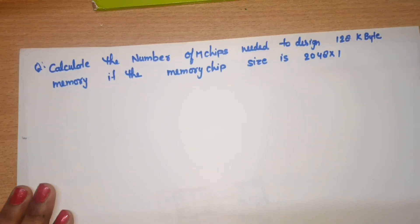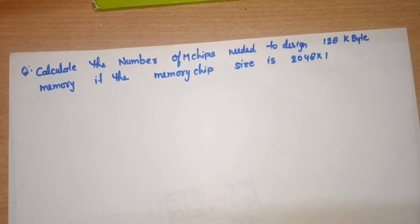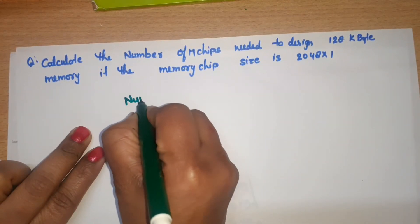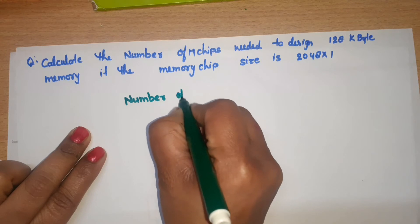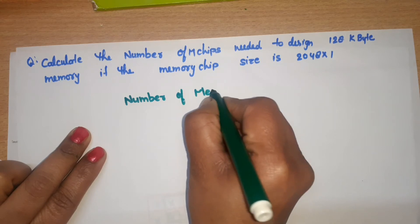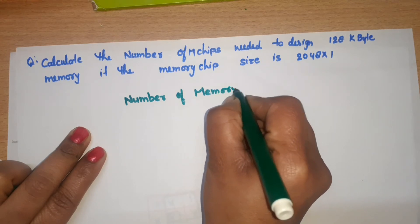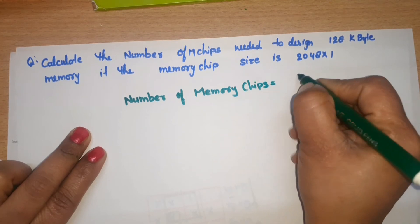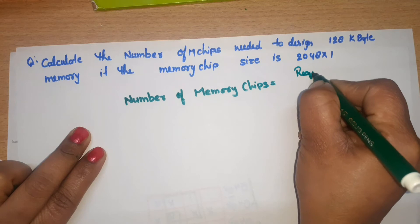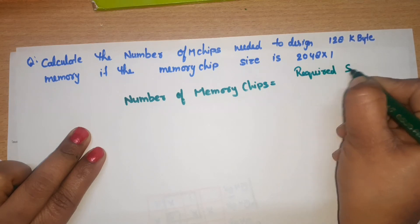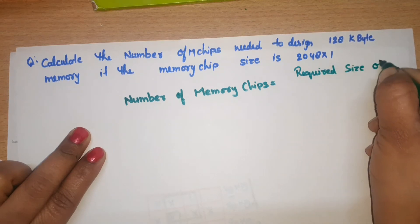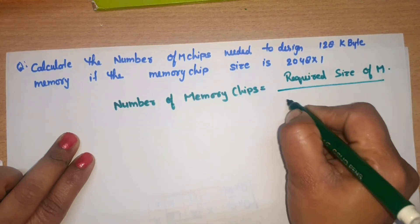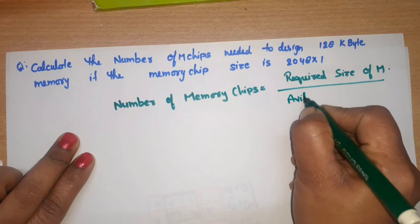First of all, we will see what is the available size and what is the required size. The formula is: number of memory chips = required size of memory divided by available size of memory.